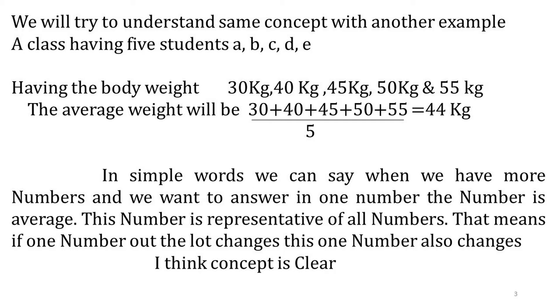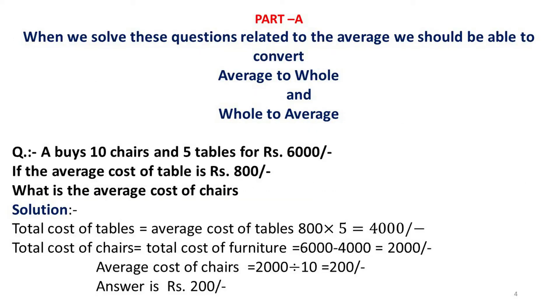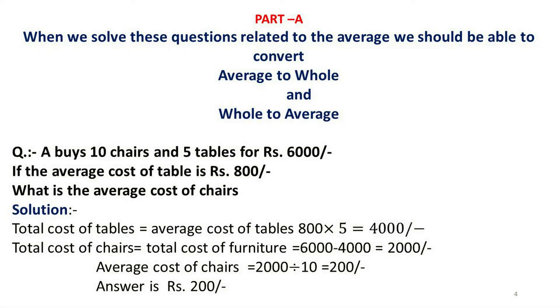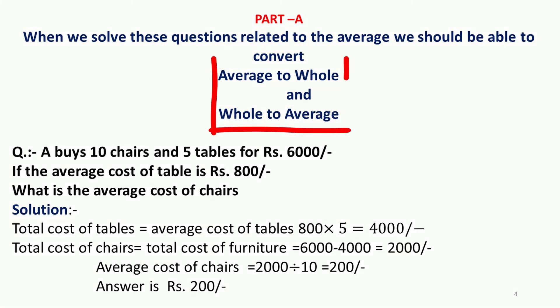Now we will try to solve questions related to examinations. First question: A buys 10 chairs and 5 tables for Rs. 6000. If the average cost of a table is Rs. 800, what is the average cost of a chair? Here there are two key words: average and total. When solving average problems, we must understand the concept of total and average — converting total into average and average into total.